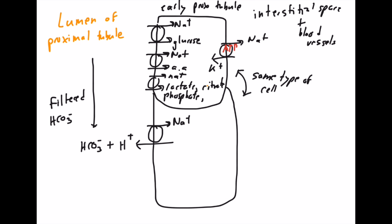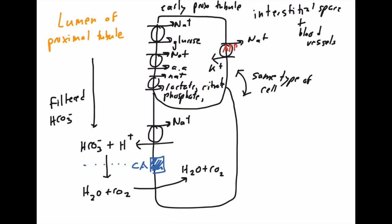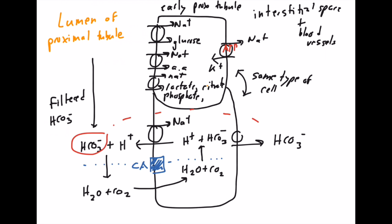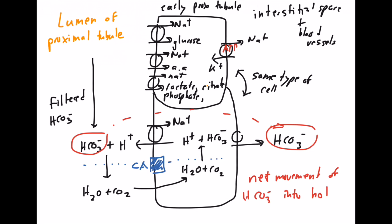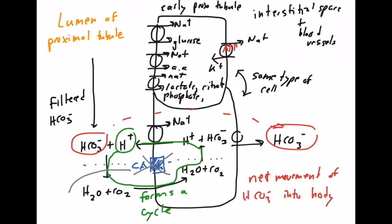The filtered bicarb is going to couple with that hydrogen ion that is antiported out of the cell. Carbonic anhydrase is going to convert all that into H2O plus CO2. The CO2 is drawn back into the cell, and then carbonic anhydrase again converts that CO2 to HCO3-, which is drawn back into the body. Basically, you've taken that filtered HCO3- and put it back in the body through this system — net movement of HCO3- into the body. The H+ forms a cycle, getting reused repeatedly, holding bicarb's hand to allow it to get back into the body. The H+ and carbonic anhydrase work together in concert to move bicarb from the lumen back into the interstitium.